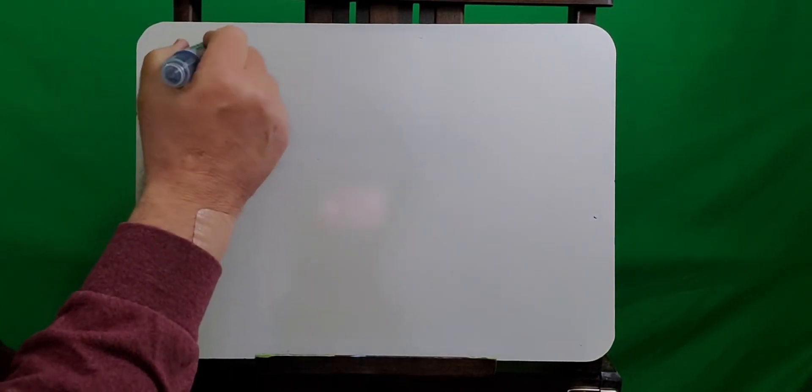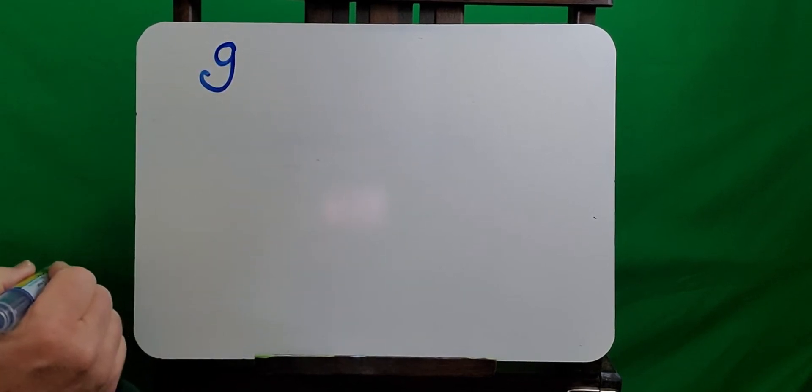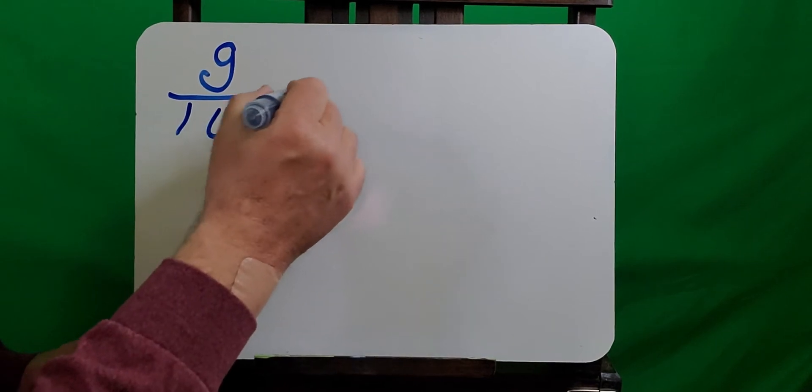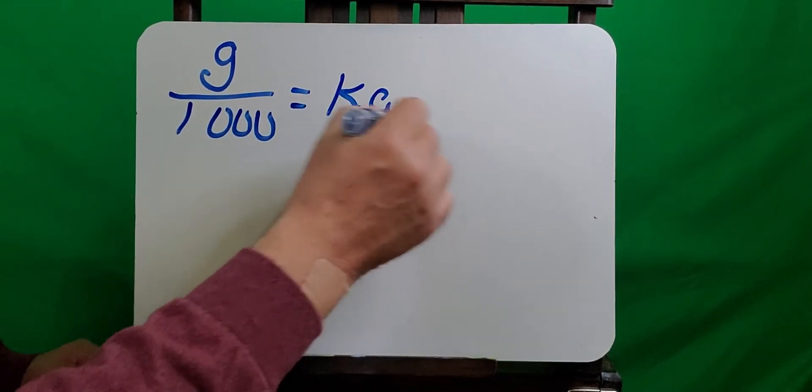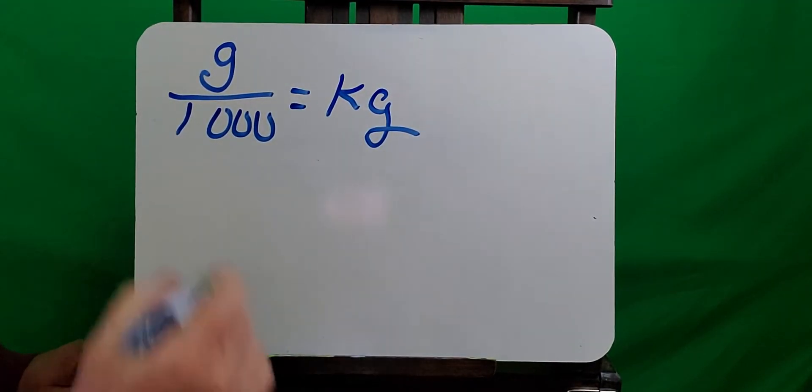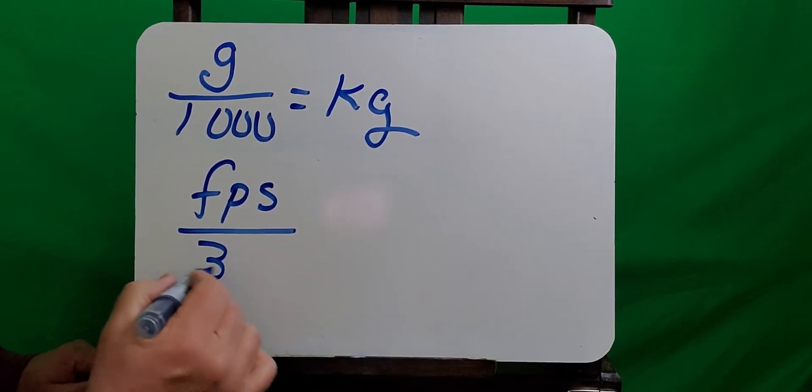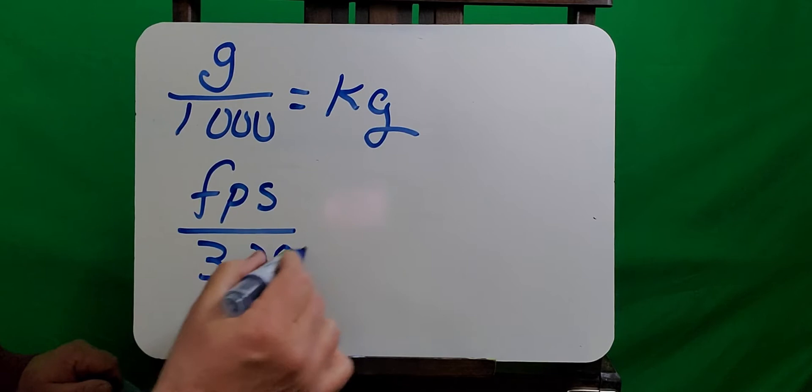Before we use this formula, we're going to have to do a couple conversions. We're going to have to convert grams into kilograms. So grams divided by 1,000 is equal to kilograms. And to convert feet per second into meters per second, you take your feet per second divided by 3.28. And that will get you your meters per second.